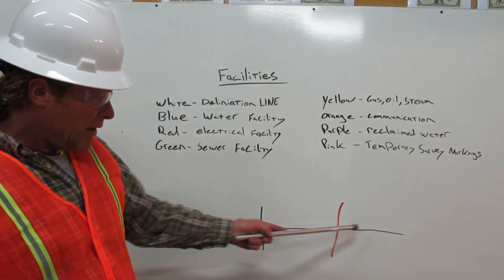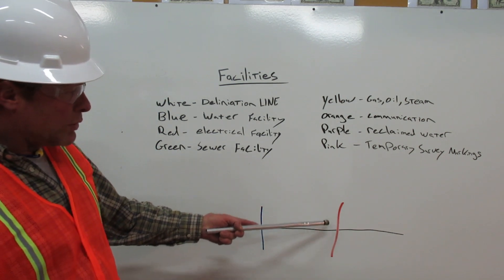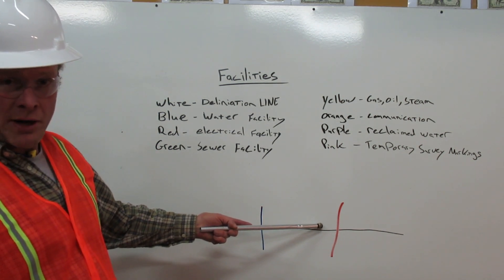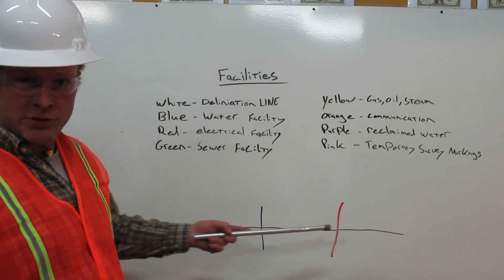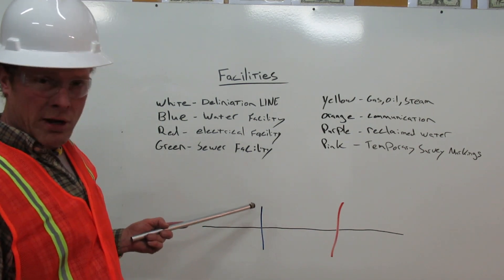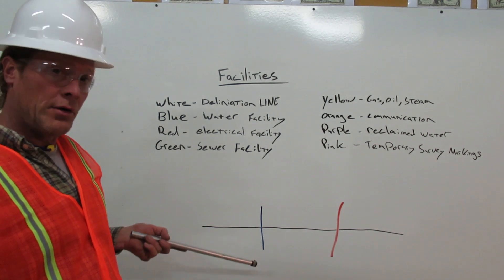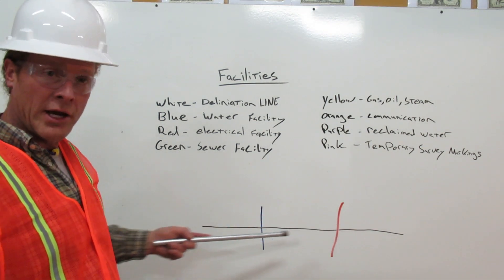Here we have our delineation line. Here is a red line which represents an electrical line underneath our dig or our delineation line. This blue line represents a water line underneath our delineation line.